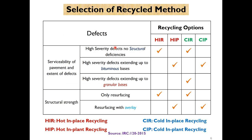IRC 120:2015 provides guidelines on when to use HIR (hot in-place recycling), CIR (cold in-place recycling), or in-plant recycling. When there are high severity defects but no structural deficiency, you can use HIR or CIR. When defects extend up to the bituminous base, in-plant recycling is better. When high severity defects extend up to the granular base, the only option is cold in-place recycling. When only resurfacing is required, HIR or CIR suffice; when resurfacing with overlays is required, in-plant recycling is better.